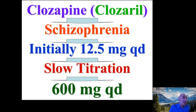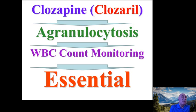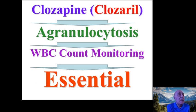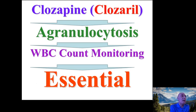Clozapine is used to treat schizophrenia, starting at an initial dose of 12.5 mg daily with slow titration up to a maximum dose of 600 mg daily. The major problem with clozapine is its effect on white blood cells — it can cause agranulocytosis, a significant decrease in white blood cell count. Therefore, it is essential to monitor white blood cell counts. In the pharmacy, clozapine prescriptions are not dispensed without current blood work results.